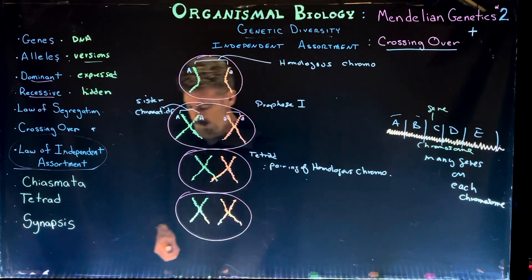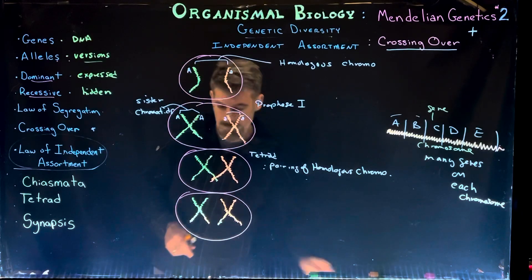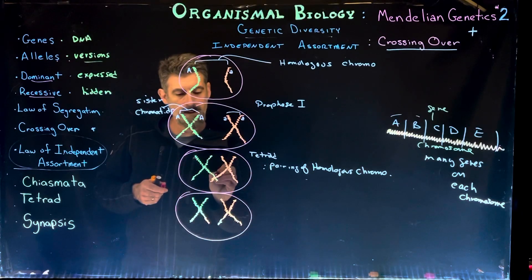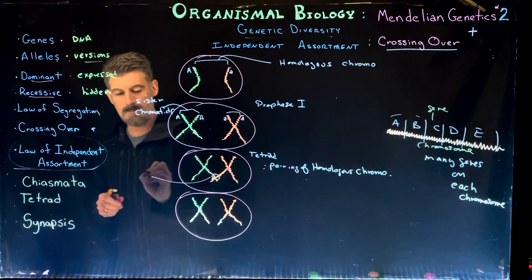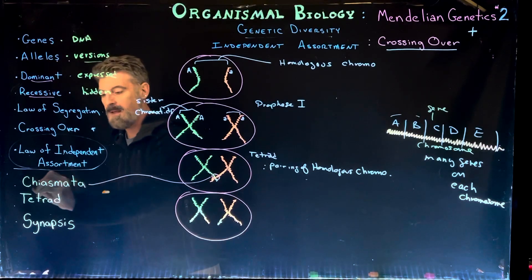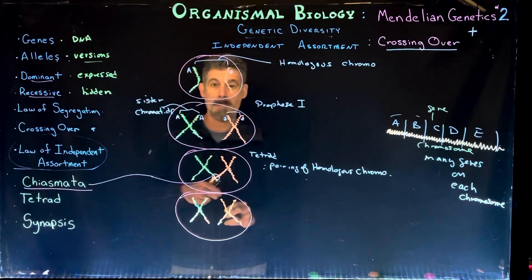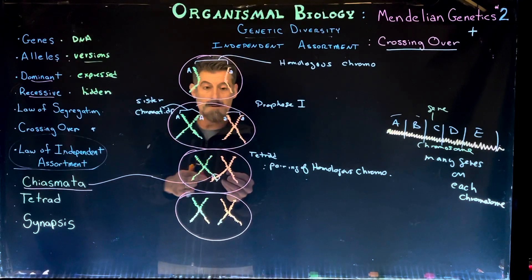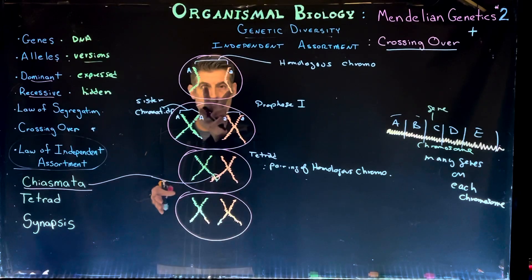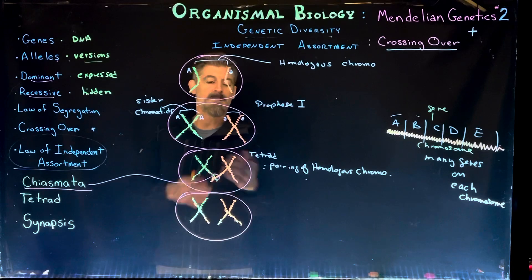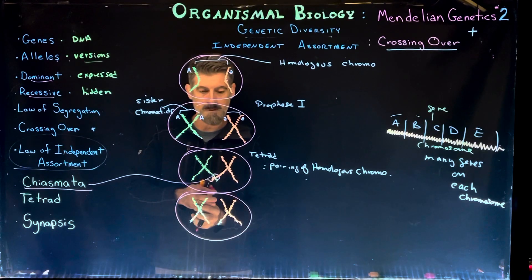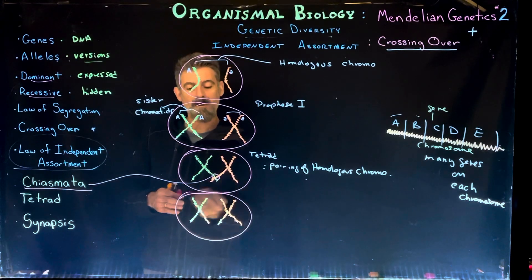Something else is going on right in this area. We have what's referred to as a chiasmata. You can see one chromatid here is crossing over with another — I colored them differently even though they're the same chromosome, one from the mother and one from the father, just so we can see the difference between the two of them. That little bit will swap.